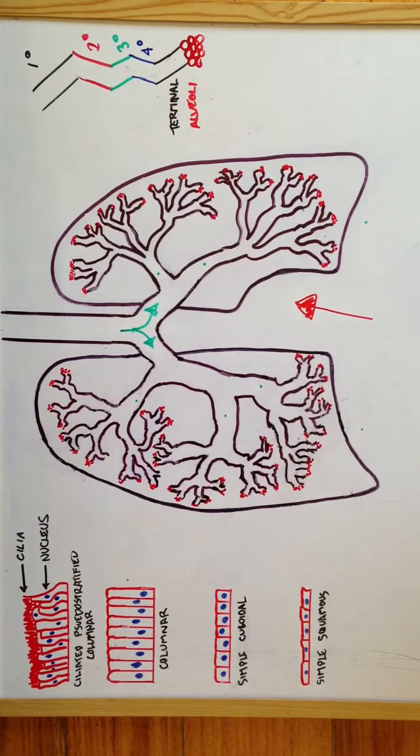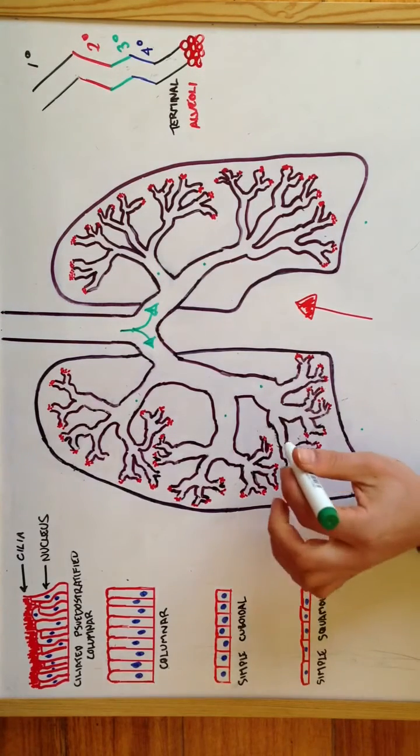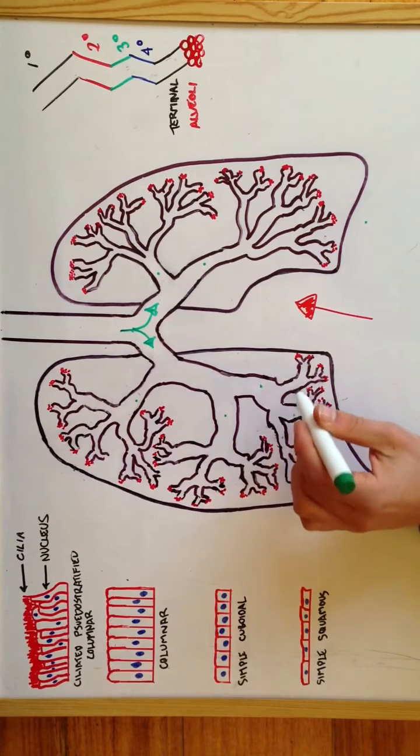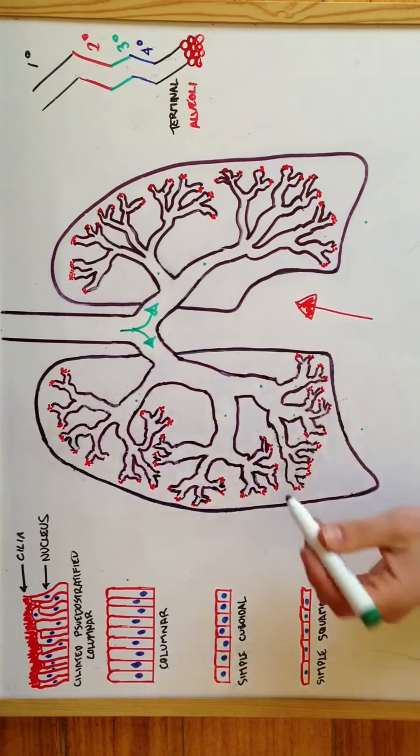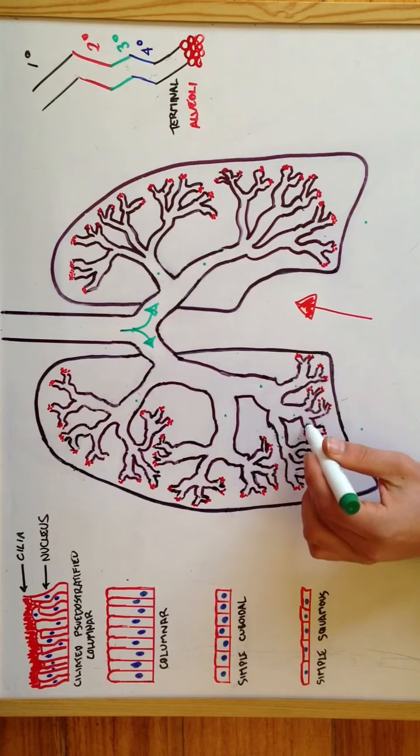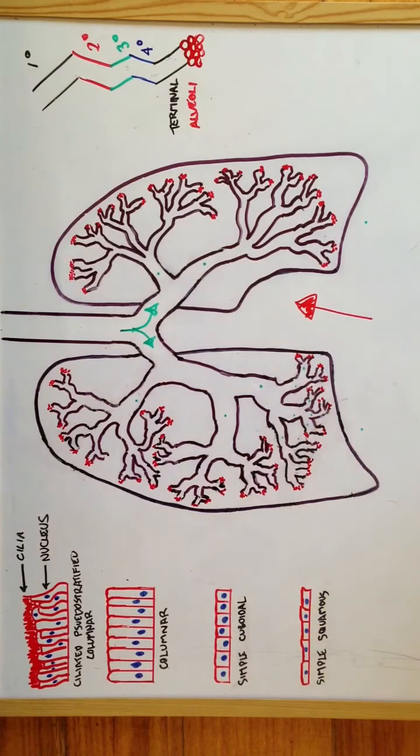From the secondary bronchi, they will then divide into the tertiary bronchi. I'm going to use just this branch to simplify. Then into the bronchioles, or some may know them as the quaternary bronchi.